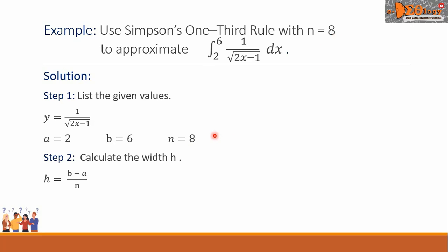For step 2, we calculate the width h. Our formula is b minus a all over n. We substitute the corresponding values, we have 6 minus 2 all over 8. Simplifying this into decimal, we have 0.5.